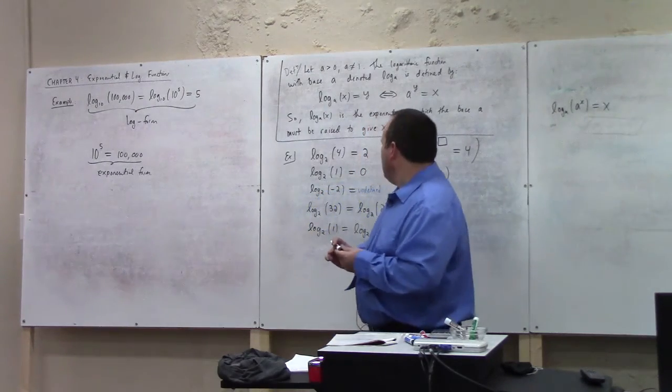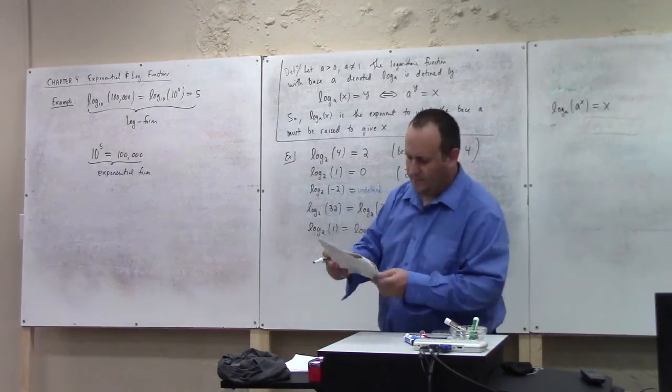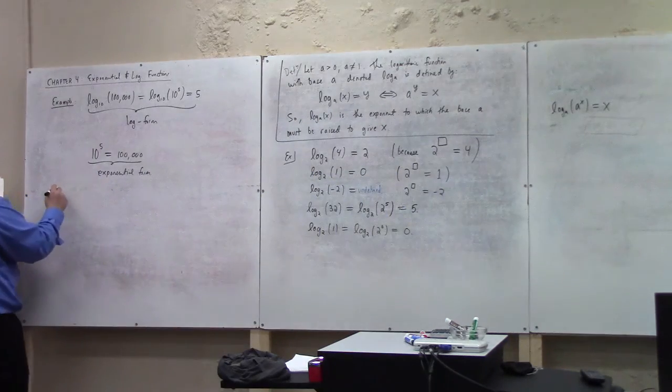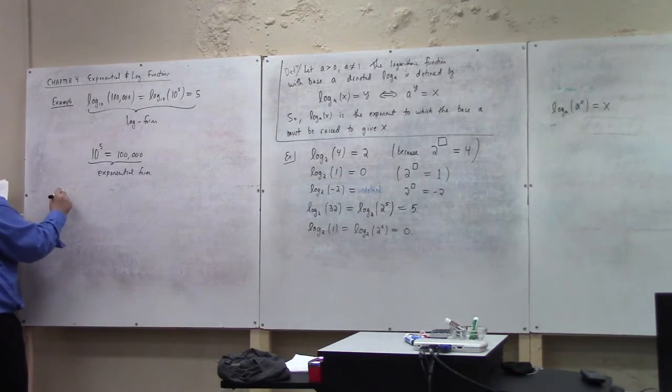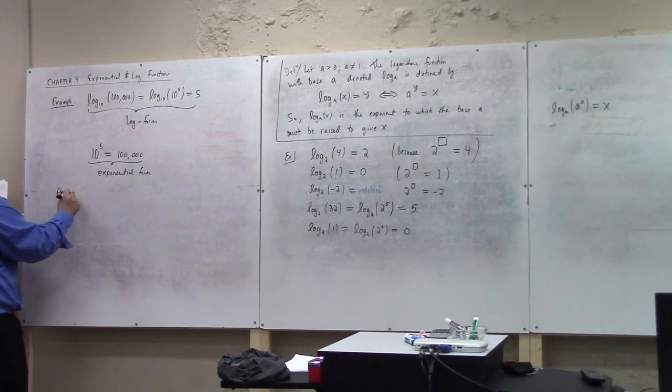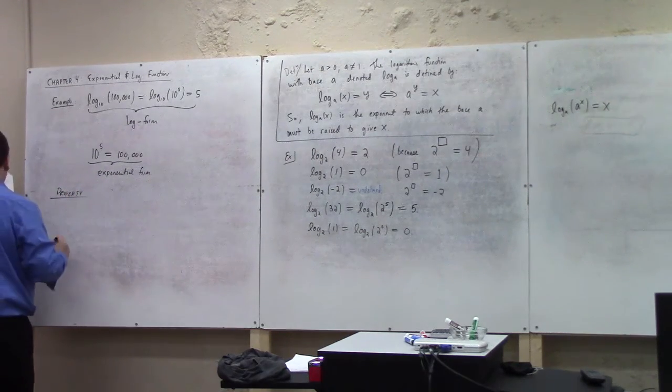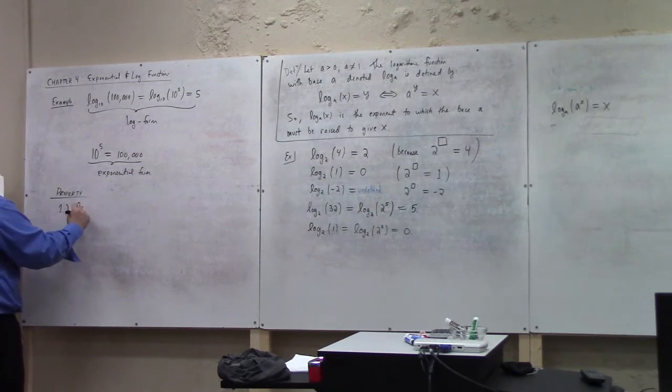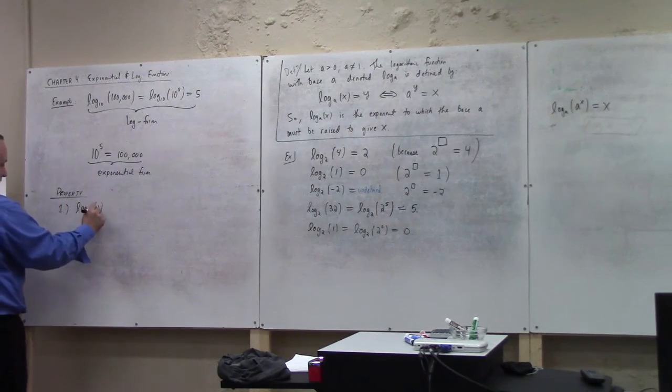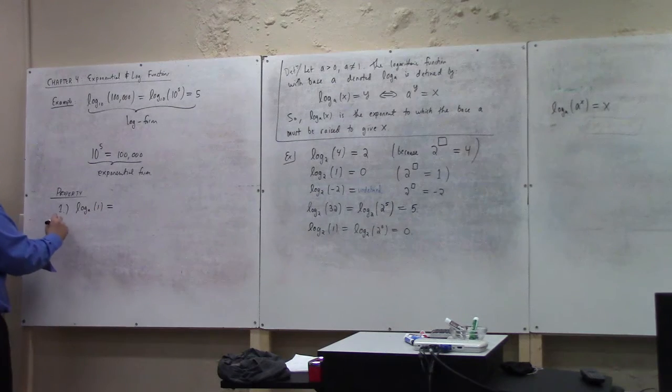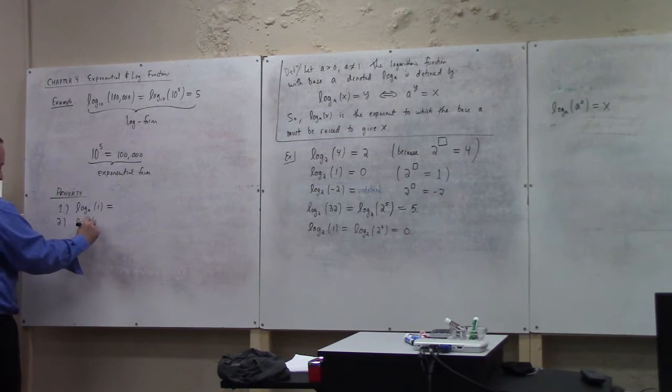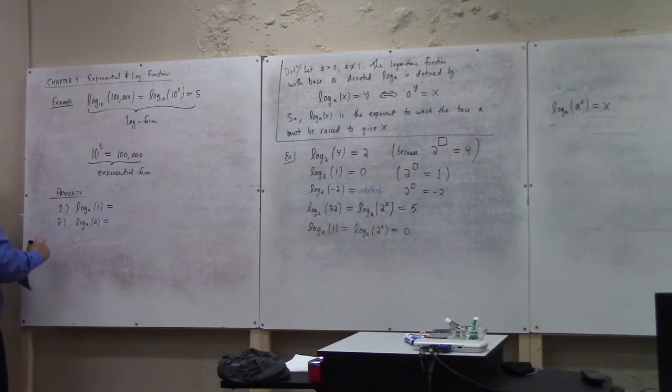So I think the properties of logarithms is helpful. These ones we don't really have to, we don't really want to think through these. These would be good to sort of memorize, just to have on tap. So property 1, log base A of 1 is what? Log base A of A to the X is what?